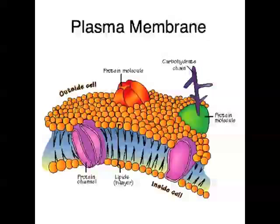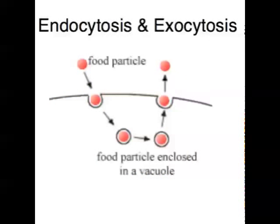Sometimes molecules or substances need to go into or out of a cell against the concentration gradient, and in these instances energy is required. One example is active transport, which involves a carrier protein for each substance transported across the membrane. There's also bulk transport, which involves transport vesicles. The vesicles fuse with the plasma membrane, and a large amount of substances are either taken into the cell — that's called endocytosis — or a large amount of substance leaves the cell — and that's called exocytosis.